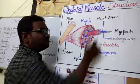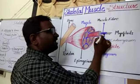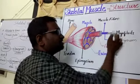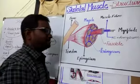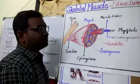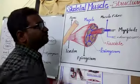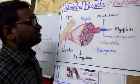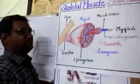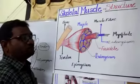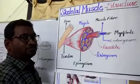Within the muscle fiber, another filament called myofibrils is present. This is the structure of skeletal muscle. Thank you.